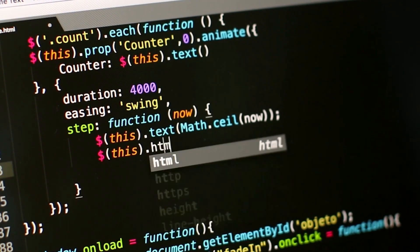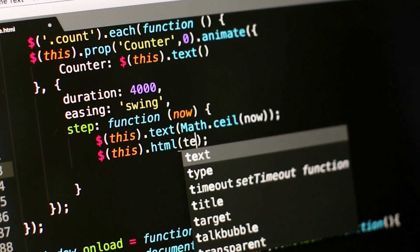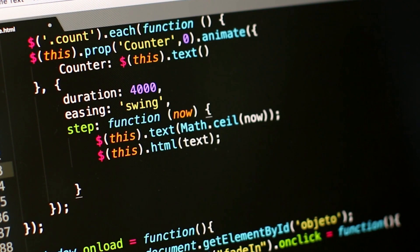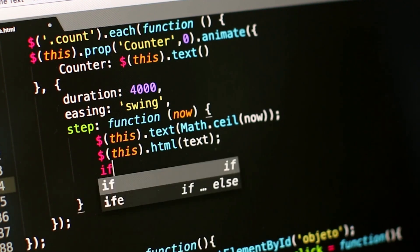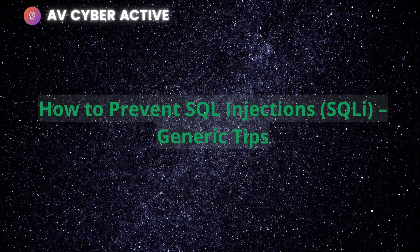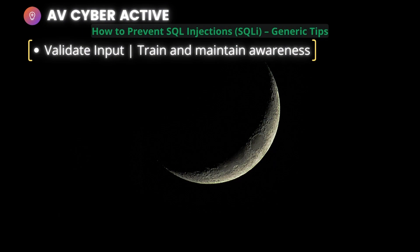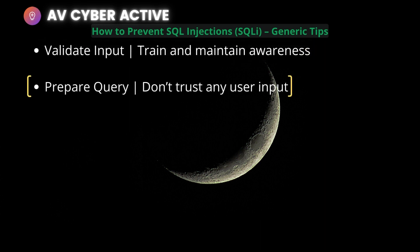This video wouldn't be complete without covering how you can prevent SQL injections. Here are six generic tips. First: train and maintain awareness — validate input. Everyone involved in building the web application must be aware of the risks associated with SQL injections. Provide suitable training to your staff and developers.